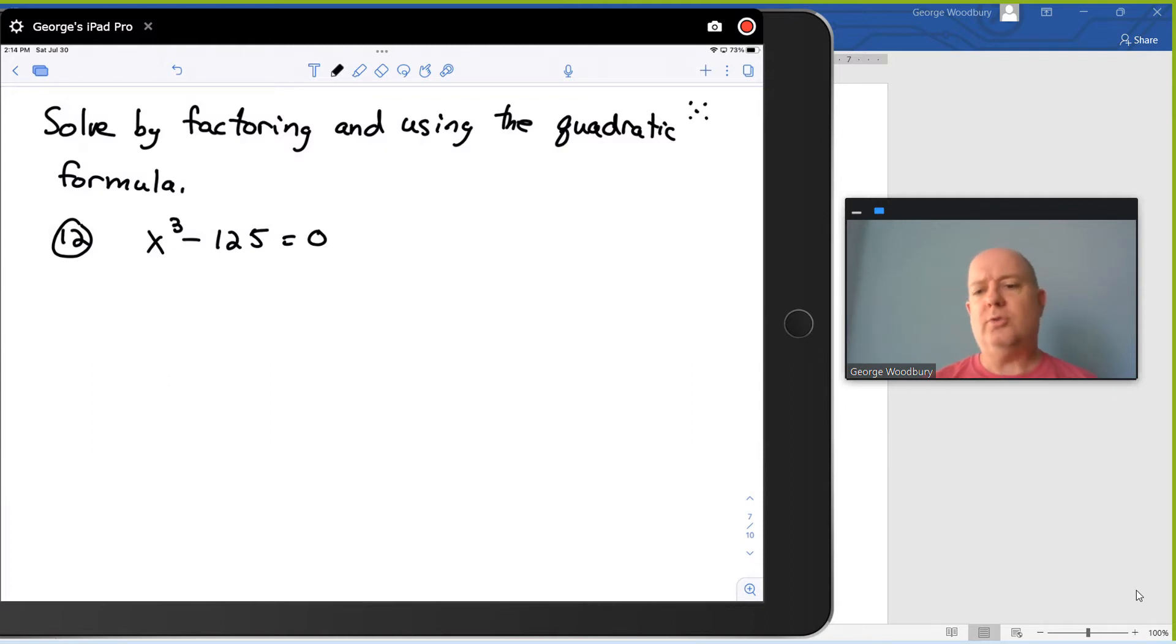One solution may jump out at you. We know that 5 cubed is 125, so that's one of the solutions. But there's actually two more that are complex numbers, and this approach will show us how to find those.